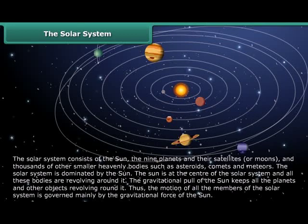The gravitational pull of the Sun keeps all the planets and other objects revolving around it. Thus the motion of all the members of the Solar System is governed mainly by the gravitational force of the Sun.